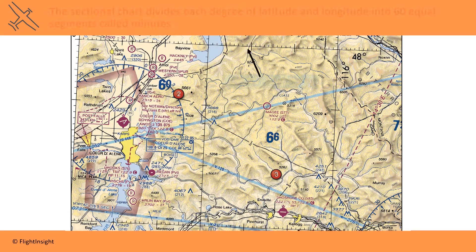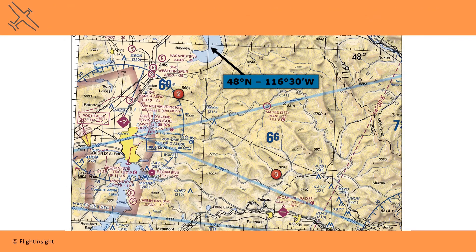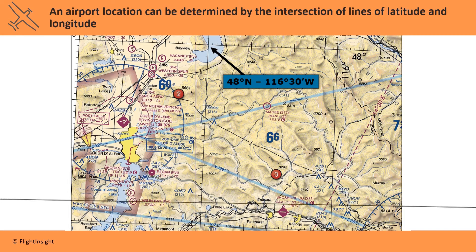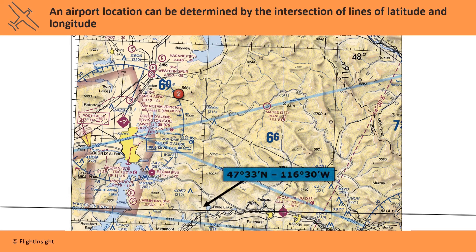If we move west along the line of latitude to the next vertical line, we've moved half of 1 degree, or 30 minutes. So this coordinate is 48 degrees north, 116 degrees 30 minutes west. An airport location can be determined by the intersection of lines of latitude and longitude. Shoshone County Airport is at 47 degrees 33 minutes north, 116 degrees 11 minutes west.